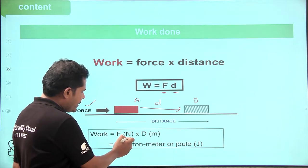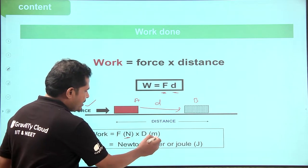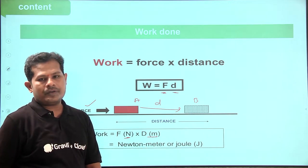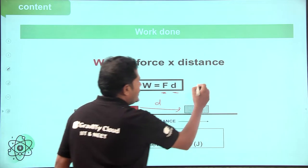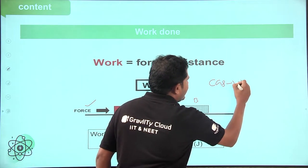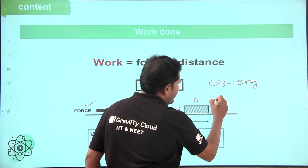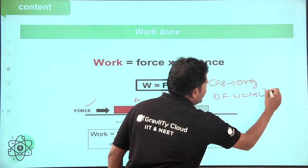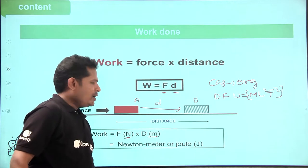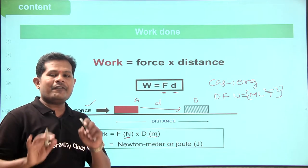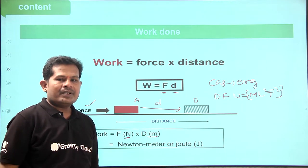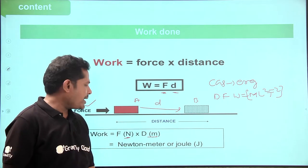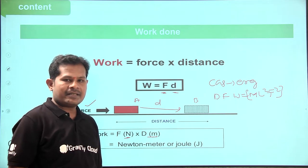Along a straight line, distance is equal to displacement. The product of force and displacement is called work done. Force is taken in newtons, distance in meters. Newton-meter is the unit, also called joule. The SI unit is joule; the CGS unit is erg. The dimensional formula of work done is ML²T⁻². Simply remember: product of force and distance.